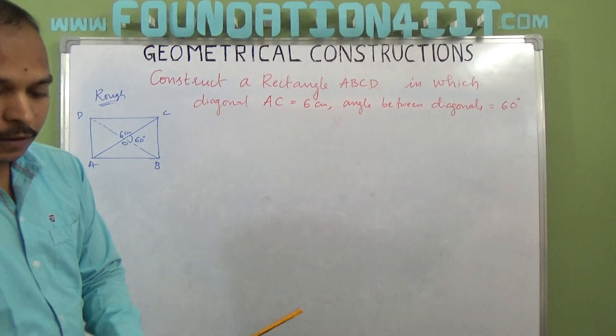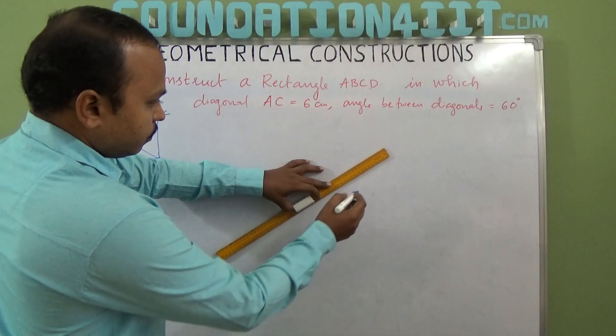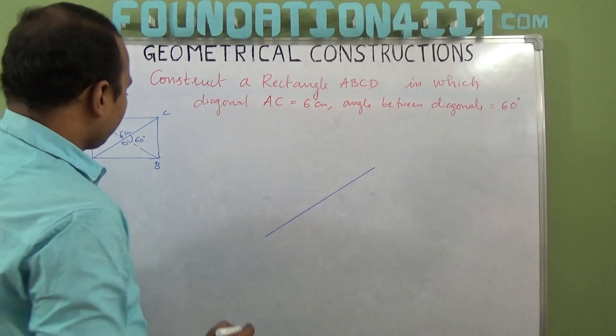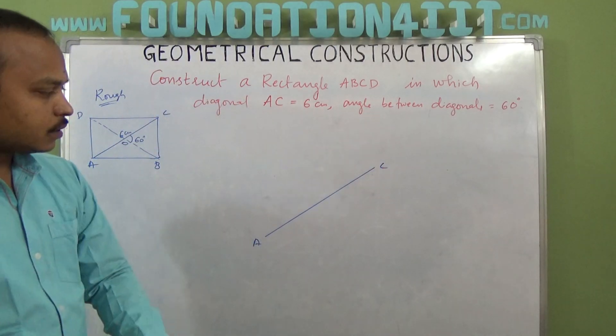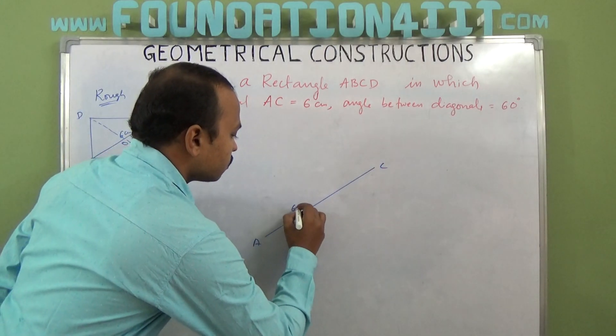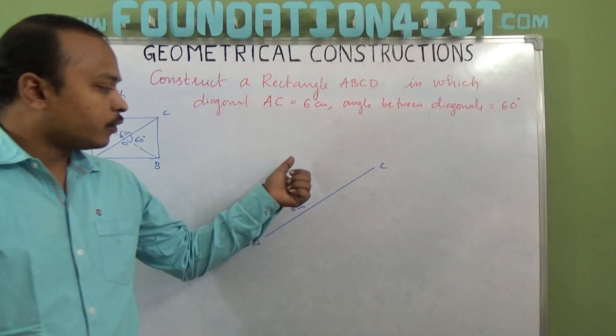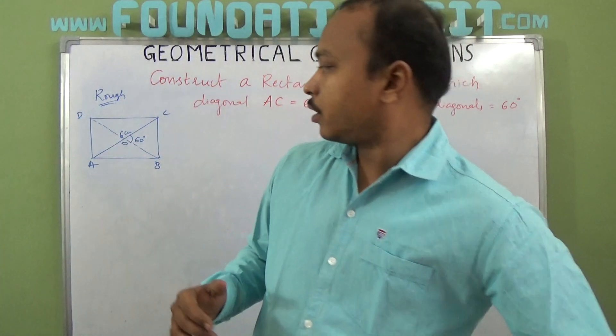I am constructing diagonal AC now. This is a 6 centimeters line segment AC. Now we need to find out the midpoint of this AC.